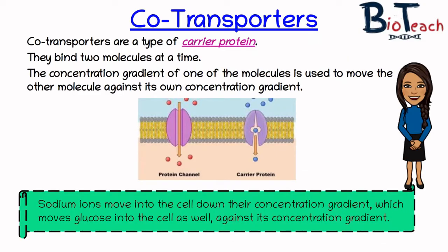These are a type of carrier protein which are able to bind two molecules at a time. There is a concentration gradient which is created of one of the molecules, and that concentration gradient is used to move the other molecule against its concentration gradient. It's a bit like a hitchhiking system. The one that's in the lower concentration outside of the cell — for example glucose — will hitchhike a ride with a molecule, usually an ion, into the cell. It's usually the sodium ion which allows the co-transport of glucose into the cell when it's in lower concentrations outside of the cell.